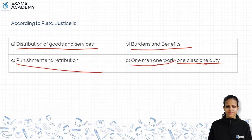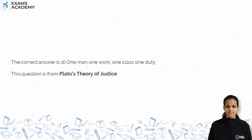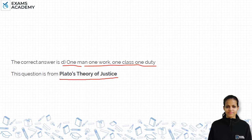This question is almost purely knowledge-based because these four options are telling different notions of justice. You should know Plato's notion of justice in order to answer this question. The correct option is D — one man, one work, one class, and one duty. Let's see what Plato's theory of justice is.